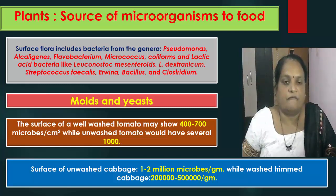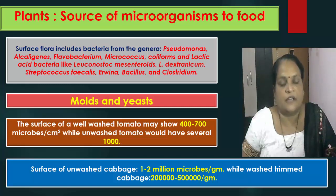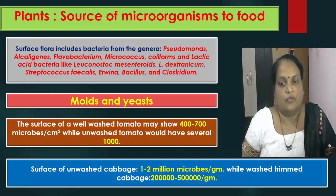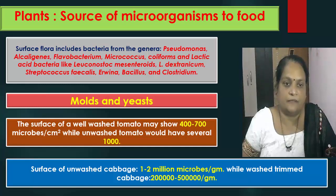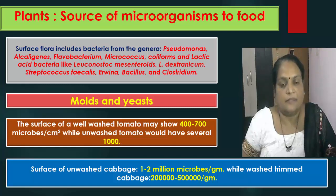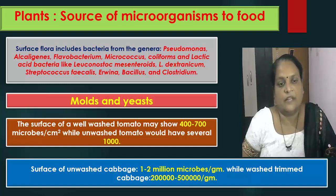The surface of a well-washed tomato may show 400 to 700 microorganisms per square centimetre, while the unwashed tomato would have several thousand microorganisms per square centimetre. The surface of unwashed cabbage may harbour 1 to 2 million microorganisms per gram, while the washed trimmed cabbage contains 2 lakh to 5 lakh microorganisms per gram.